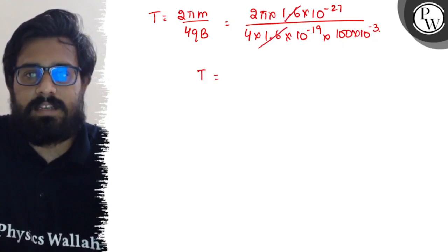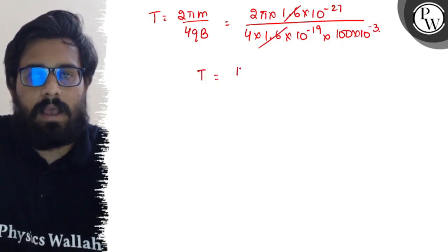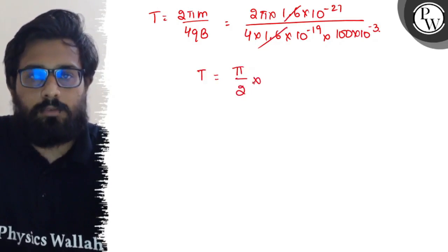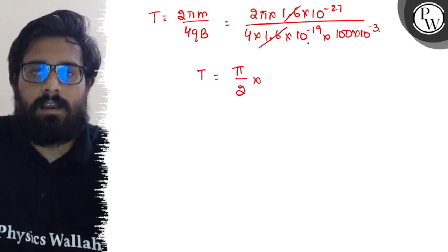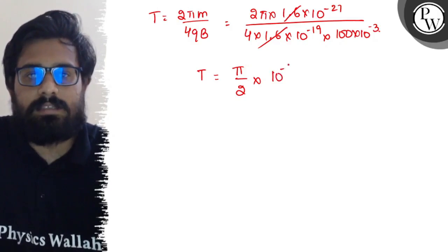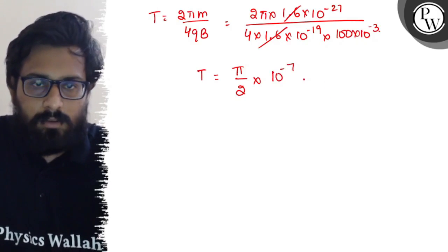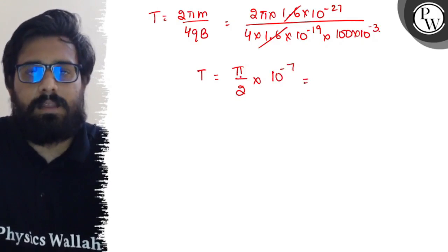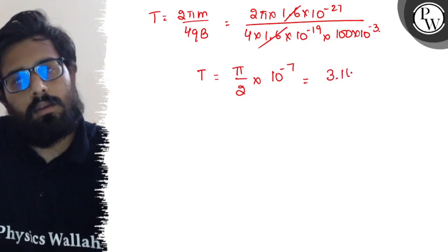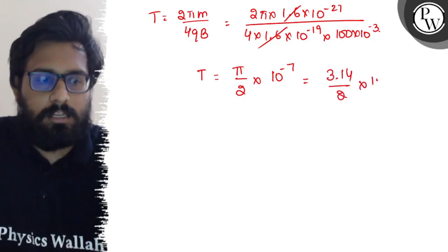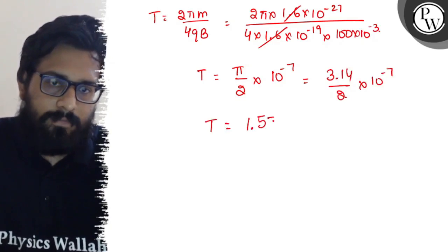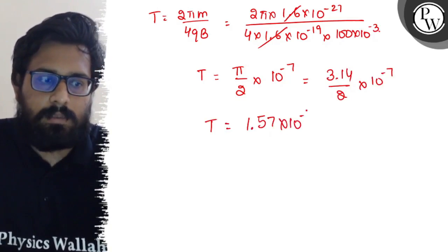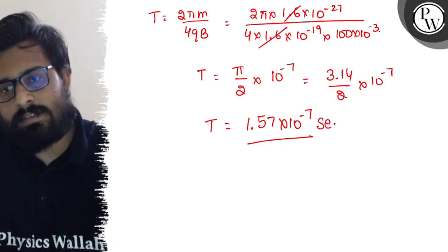So once you solve this part, 1.65 and 1.6 cancel out and this comes out as π/2, and this can be written as 10^-7. Now when you solve this part you will get a value of 3.14/2 × 10^-7.